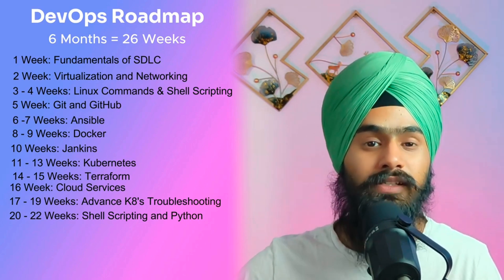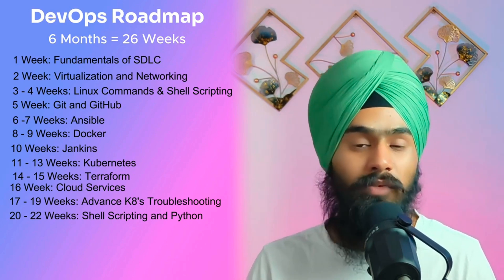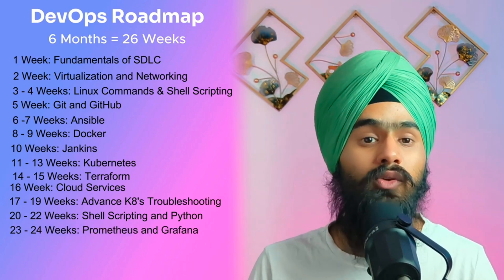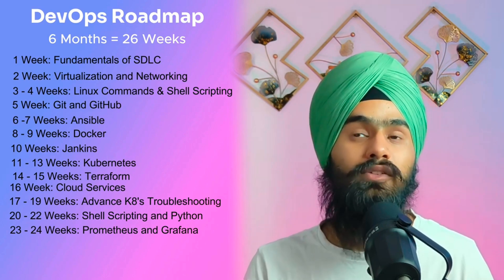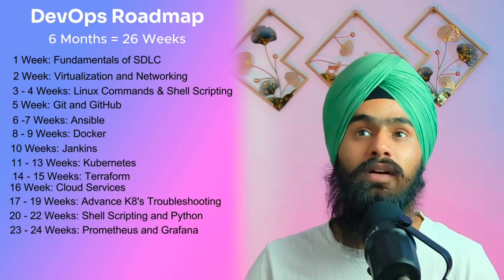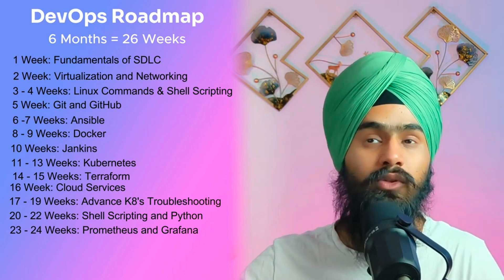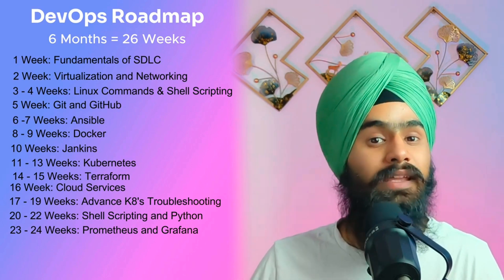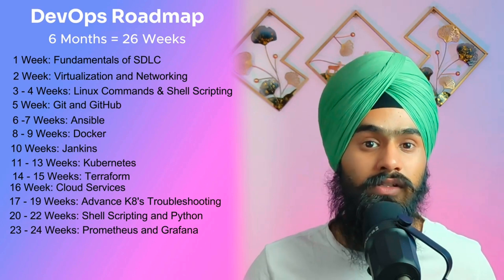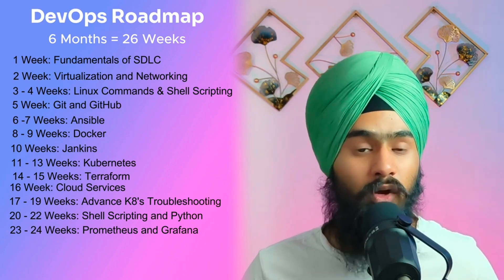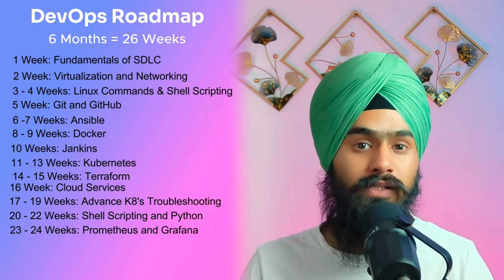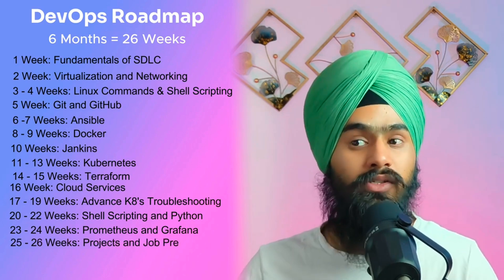In weeks 23 and 24, learn monitoring tools. Companies expect DevOps engineers to know Prometheus and Grafana. You don't have to be perfect — just know how to configure Prometheus so that when CPU utilization hits 95%, your team gets email alerts. Grafana is for data visualization. Take two weeks to learn these tools.